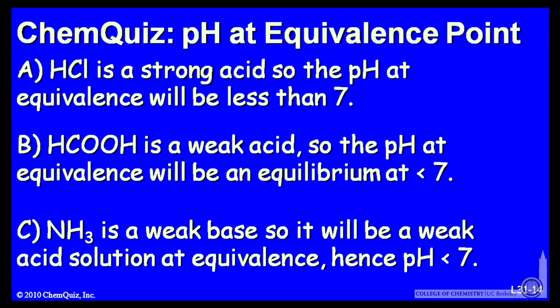Let's look at a possible explanation for each answer. A, HCl is a strong acid, so the pH at equivalence will be less than 7. B, formic acid is a weak acid, so the pH at equivalence will be an equilibrium less than 7.